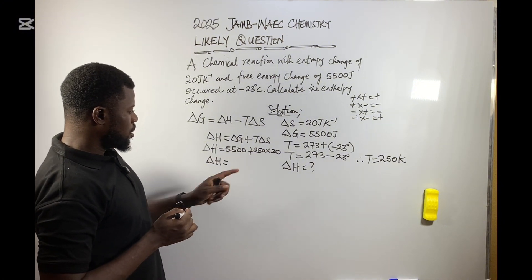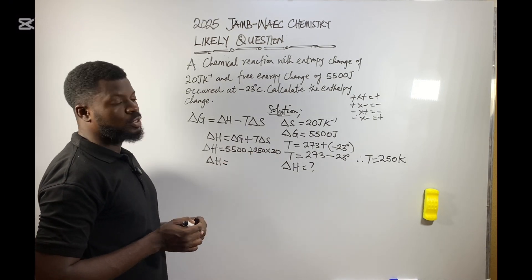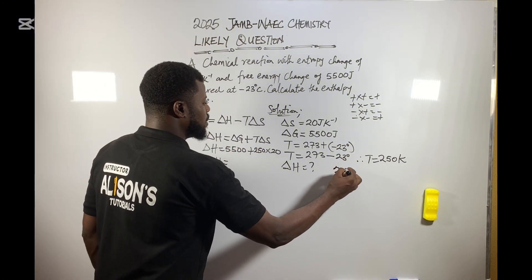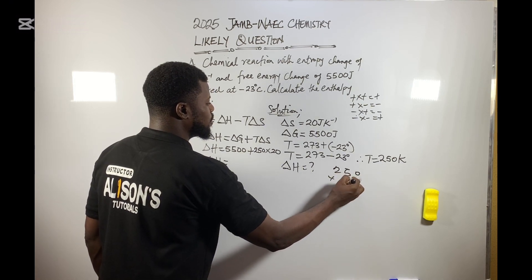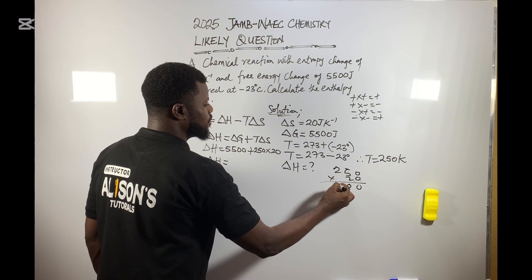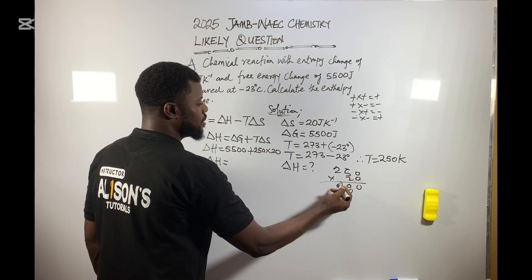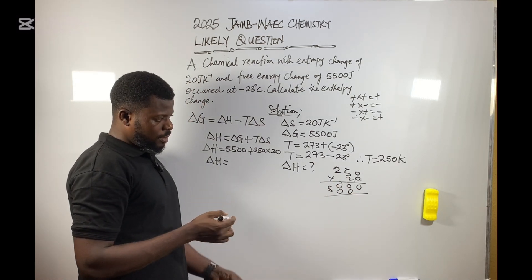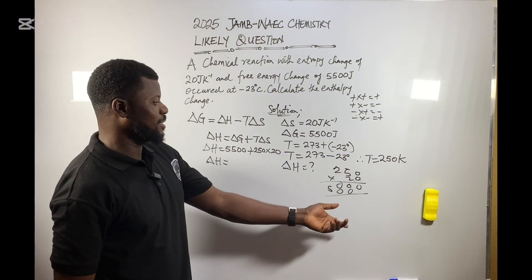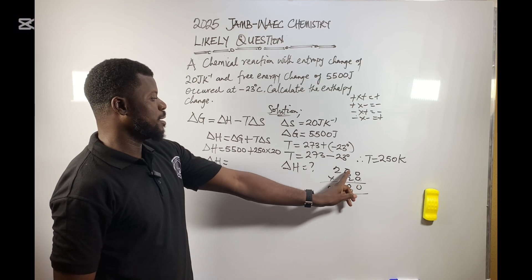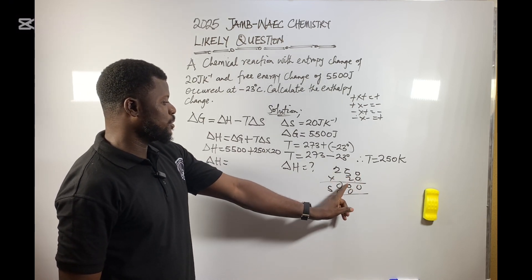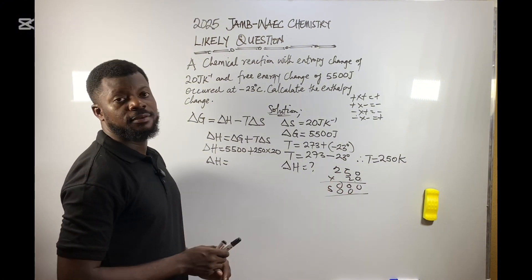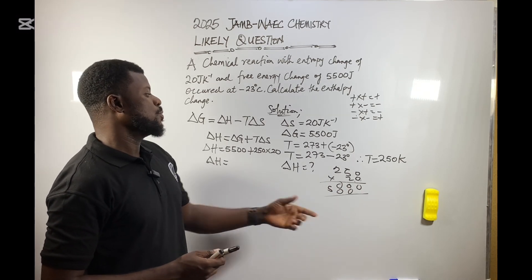If you multiply 250 by 20: 0 times 0 is 0, 0 times 2 is 0, 2 times 5 is 10 — write zero carry one, 2 times 2 is 4 plus 1 is 5. So 250 times 20 gives you 5000. Add everything together.